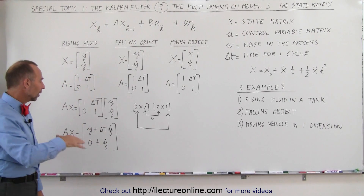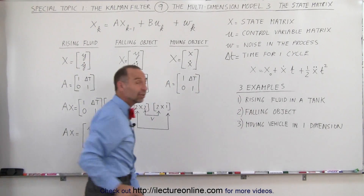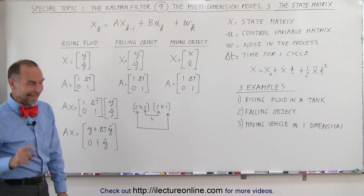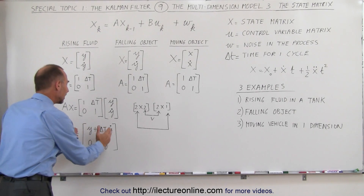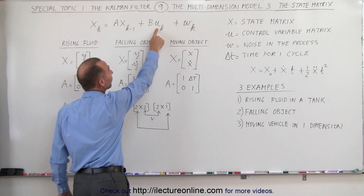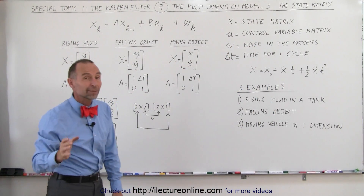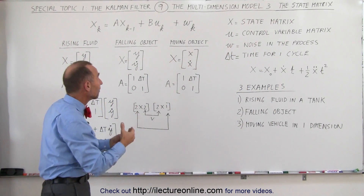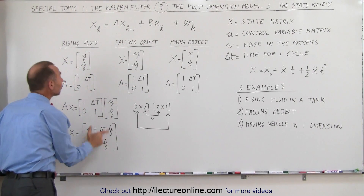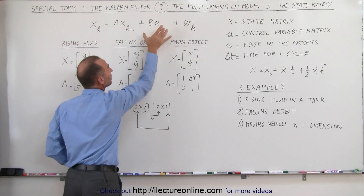But what if there's an acceleration? Especially in the case of the falling object — don't you have to account for that? Won't that change the velocity? The answer is yes, but you don't take care of that here. We take care of that in the second calculation, because u represents the control variable matrix, which in this case is the acceleration — the force of gravity causing an object to fall faster and faster. So the velocity is not updated in this first calculation; it's updated in the second calculation.